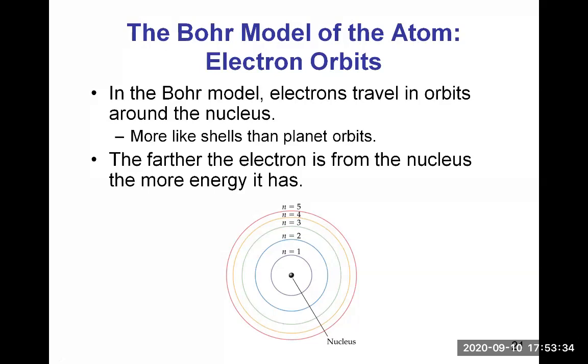Those shells are given a symbol, n, to be identified. The first shell around the nucleus is identified by n equals one. The second shell is n equals two. The third is n equals three, et cetera. The farther you go away from the nucleus, the higher the amount of energy in the shells.